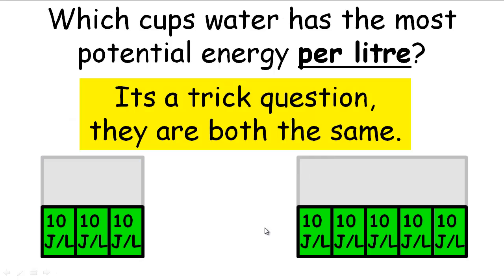And this is more useful because it will predict which way the water will flow. In this case, the potential energy per litre here is the same as the potential energy per litre here, and there is no difference in potential energy per litre, so there's no flow, or no current of water.